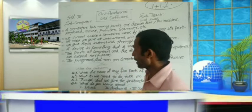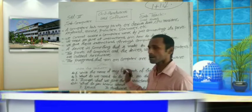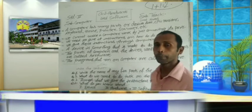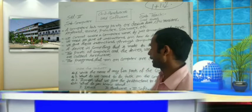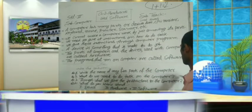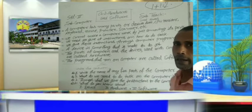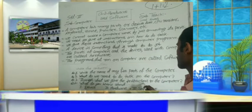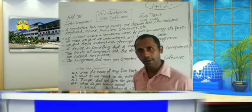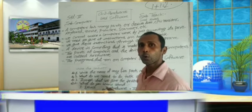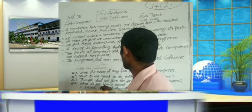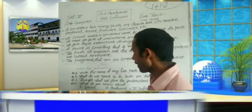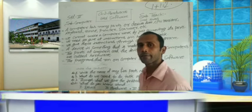Children, now answer these questions. First, write the names of any five parts of a computer. Second, why do we need to give instructions to do tasks on the computer? Third, through what do we give instructions to the computer? Fourth, what do you know about device, hardware, and software?